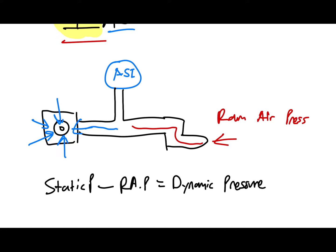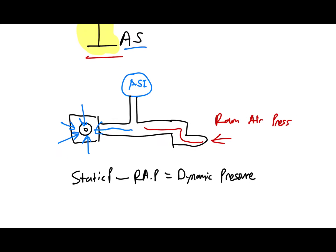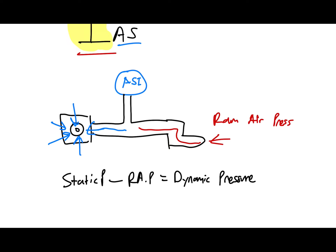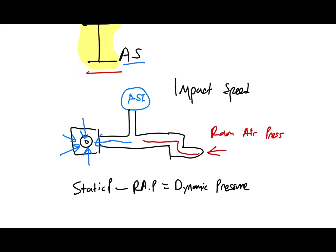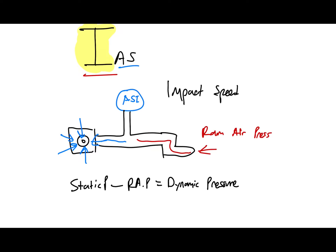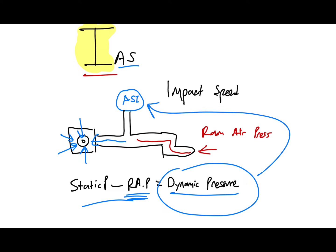What is dynamic pressure? One easy way to think of indicated airspeed is as the impact speed — the impact speed of the air molecules relative to the aircraft, or the amount of air molecules impacting the aircraft. Indicated airspeed doesn't actually measure speed; it measures dynamic pressure. When the aircraft moves faster, RAM air pressure is higher, the difference is greater, and that dynamic pressure translates into your indicated airspeed.